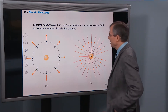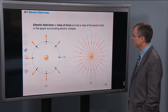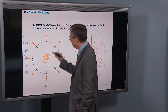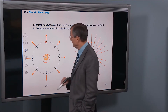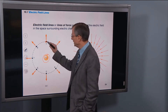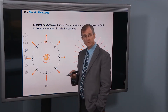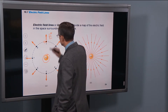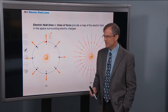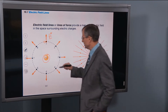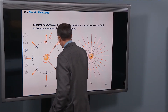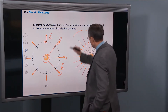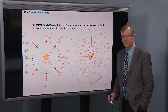Electric field lines, or lines of force, provide a map of the electric field in the space surrounding electric charges. If you have a positive charge at the center and you put a positive test charge nearby, the force of this center charge Q on that positive test charge is repulsive — it's going to repel it. That means both the force and the electric field point away. Electric field lines always come out of positive charges.